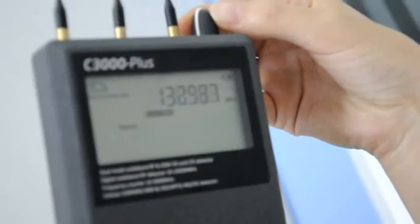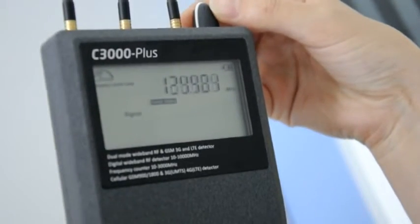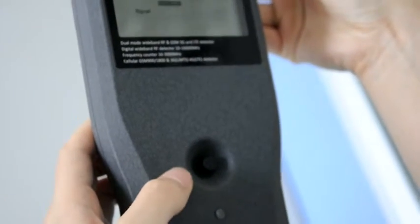And before you use this device, you should turn this knob a little to adjust the sensitivity. And when the light before this button is off, which means the device is ready to work.